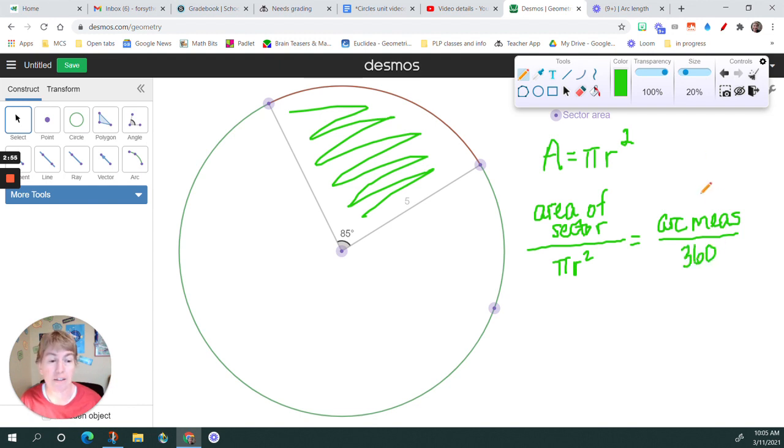And just once again, that reminder that that arc measure is a degree measure. It's the same as the central angle. So in this case, it's going to be 85.